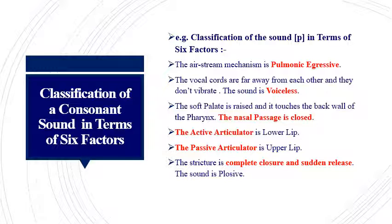The second factor is: when we pronounce /p/, what is the state of the glottis? When we say /p/, the vocal cords are far away from each other and they don't vibrate, so this sound is voiceless. The third factor is the position of the soft palate. When we say /p/, the soft palate is raised and it touches the back wall of the pharynx, so the nasal passage is closed — it's an oral sound.